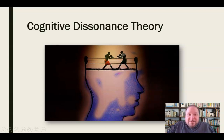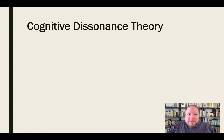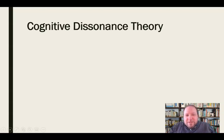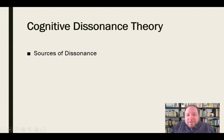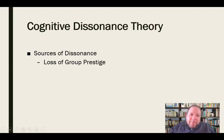We experience cognitive dissonance a lot when things aren't looking the way we think they should. As persuaders, we can actually create dissonance within our audience to try and motivate them toward some action or behavior. We can intentionally create this dissonance through different sources. For example, loss of group prestige — during the summer of 2020, after the George Floyd incident and Black Lives Matter protests, there was a real loss of group prestige for police officers.